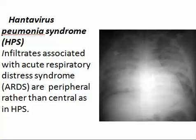Hanta virus is another entity associated with acute respiratory distress syndrome, giving the same appearances but more severe and more central. In ARDS it is more peripheral, while in Hanta virus it is more central — both showing bilateral ground glass appearance.